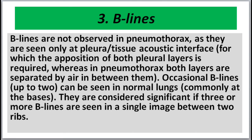B lines are not observed in pneumothorax, as they are seen only at a pleura-tissue acoustic interface, which requires opposition of both pleural layers. In pneumothorax, both layers are separated by air. Occasional B lines — up to two — can be seen in normal lungs, commonly at the bases. Three or more B lines in a single image between two ribs are considered significant.